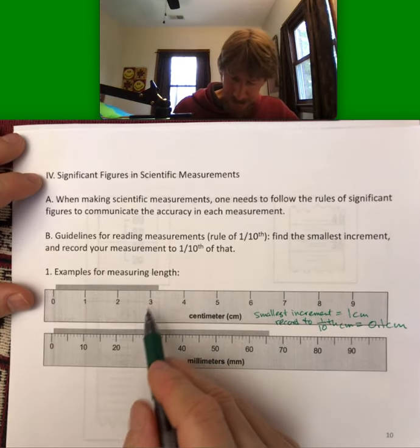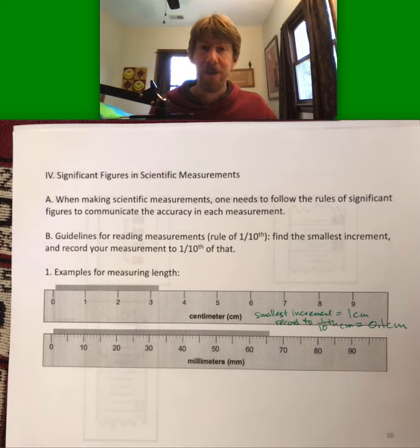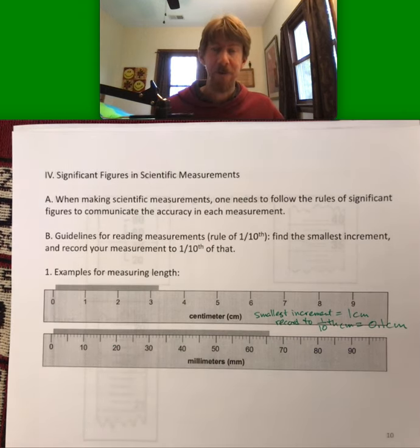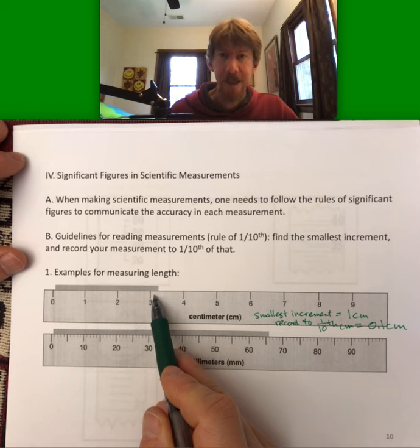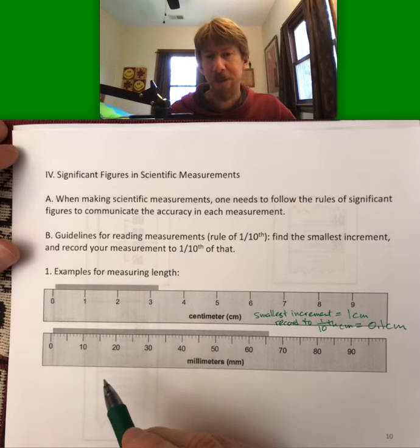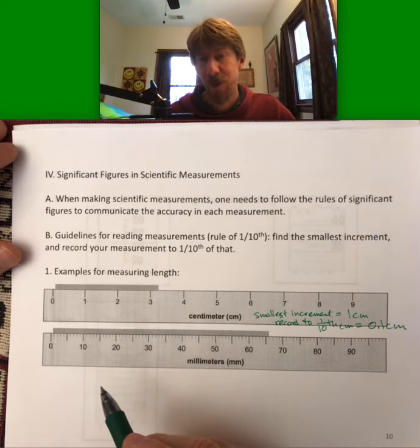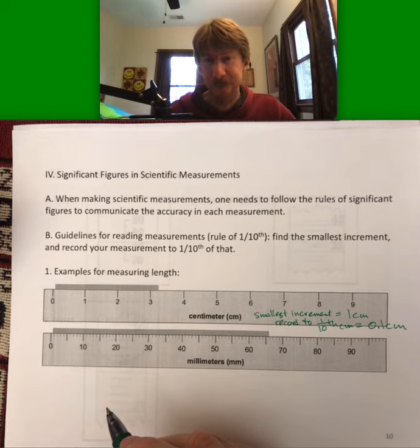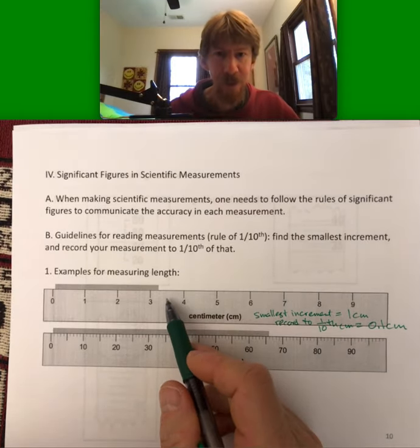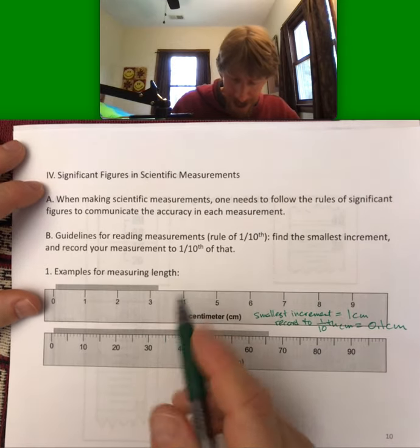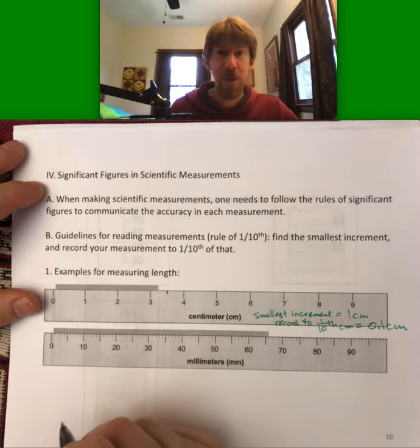And again, this follows the rule that we've been talking about for accuracy, which is you report all the digits that you know 100%. We know that this is three-something. Now, whether it's 3.1, 3.2, 3.3, we're not sure. I'm sure at least, and I think you might be, that it's not halfway, so it's not 3.5.